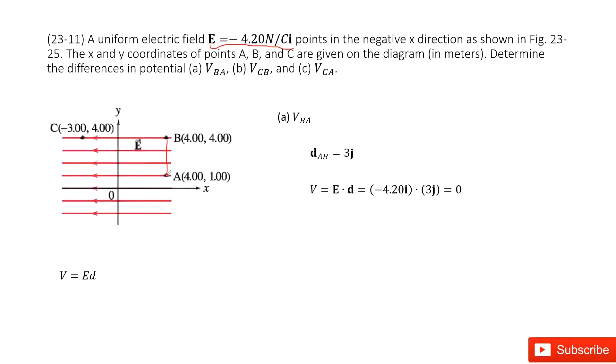So we use the final position B minus initial position A. We just have the y component there. And then we use E dot d. We get the answer there. It's just 0.